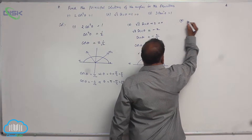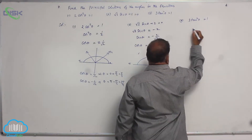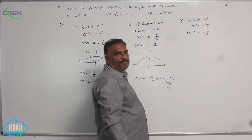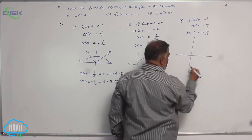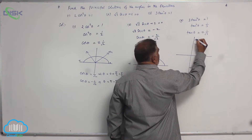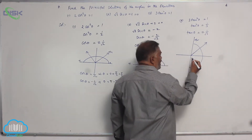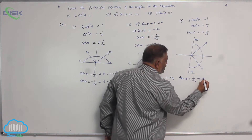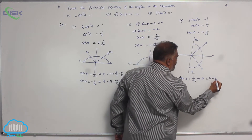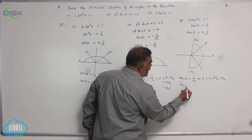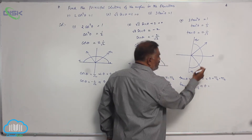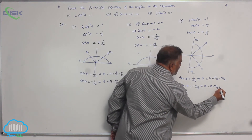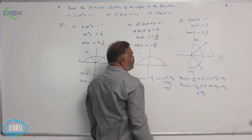Coming to the third question: 3 tan squared theta equals 1, so tan squared theta equals 1 by 3, and tan theta equals plus or minus 1 by root 3. The domain of tan theta is minus pi by 2 to pi by 2. Tan theta is positive in the first quadrant, so tan theta equal to 1 by root 3 gives theta equal to pi by 6. Tan theta equal to minus 1 by root 3 is in the fourth quadrant, giving theta equal to 0 minus pi by 6, that is minus pi by 6. Together, the solutions are plus or minus pi by 6.